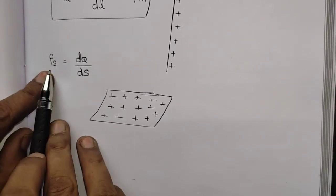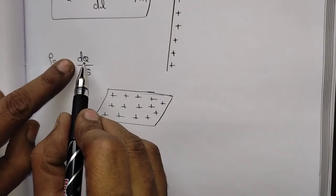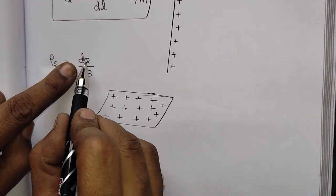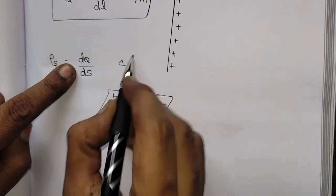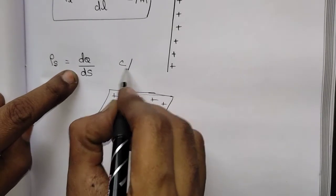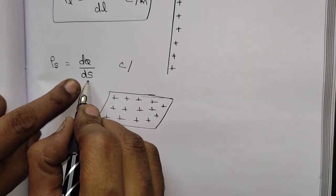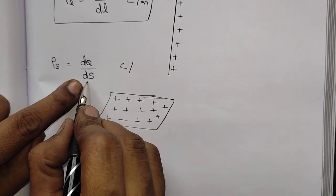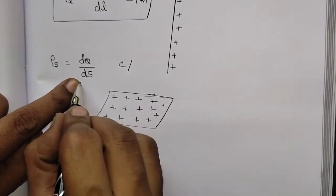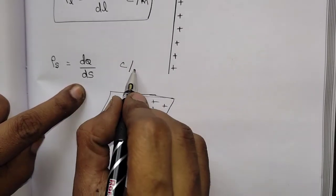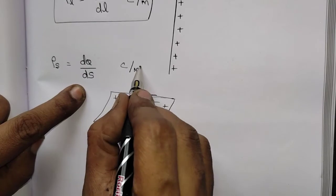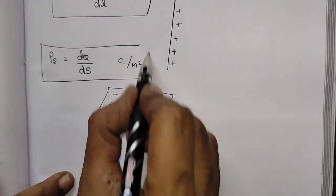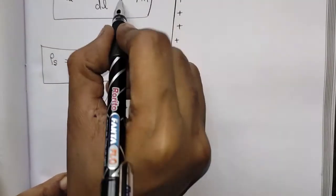What is the unit of surface charge density? The unit of charge is coulomb, and the unit of surface area is meter squared. So the unit of surface charge density is coulomb per meter squared.